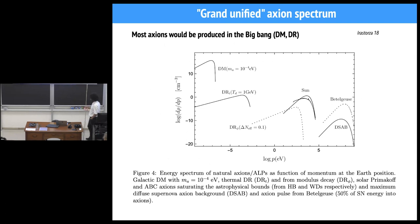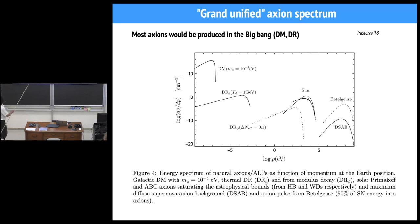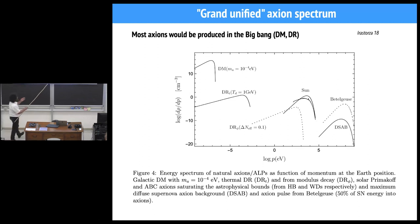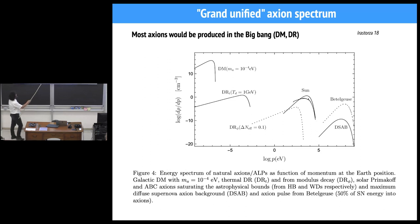I wanted to start by showing this plot inspired by the work of our previous speaker Georg Raffelt, for Grand Unified Spectra. Together with Igor Irastorza, we made an attempt to build a Grand Unified Spectra of axions in the universe. This plot shows the energy density per unit momentum of the different components of axions we expect to have in the universe if axions actually exist. Here you see the diffuse supernova axion background, axions from supernovae and the Sun, with energies of keV or MeV depending on the temperature of the star.